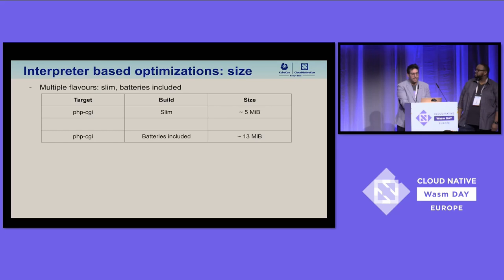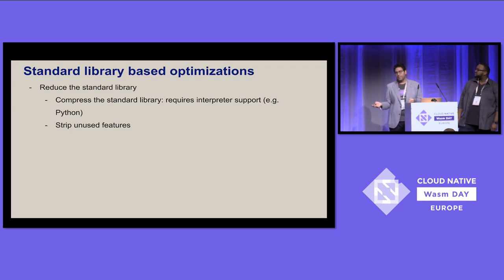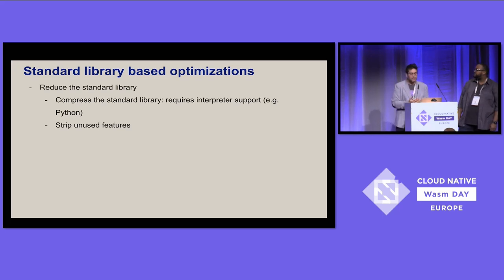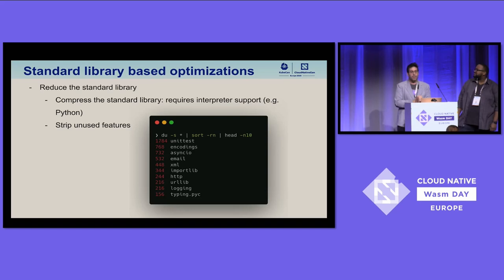But there is another moving piece: the standard library. With Python, you can reduce the standard library in two main ways. One is to zip the standard library so the interpreter unzips and reads it on the fly. Or you can strip features from it. Looking at the Python standard library, unit tests alone take a lot of space — removing that strips almost two megabytes right away.